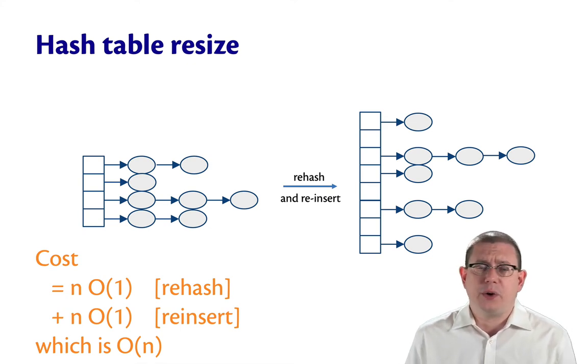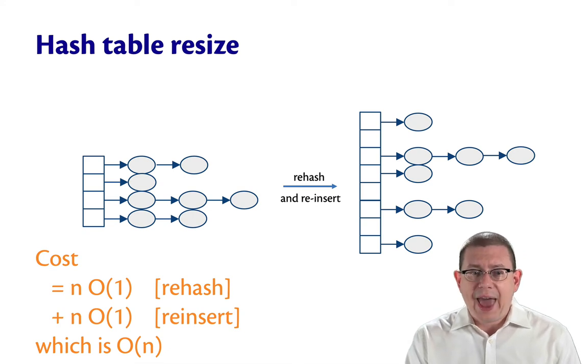And that holds whether we've got a good or a bad hash function, because in the worst case, and all the keys collide in one bucket, we're still going to have to do n insertions at that bucket. So, we've got a worst case linear time rehash and reinsert as well.